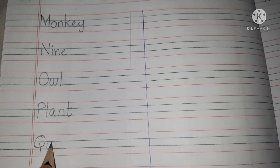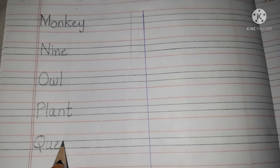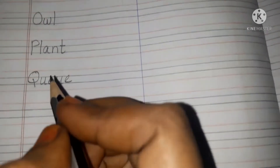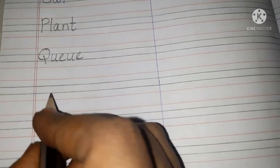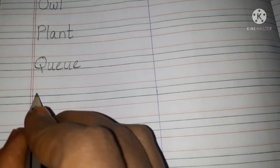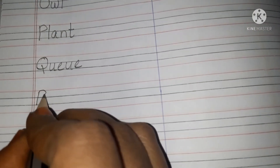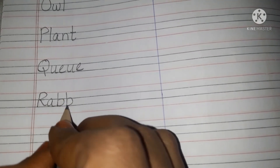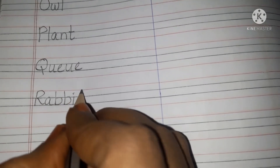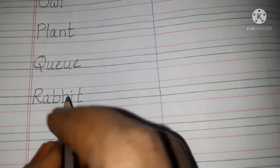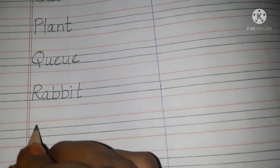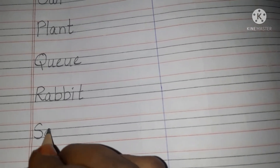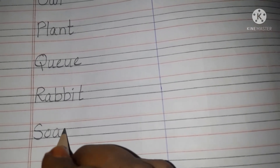O for owl — O-W-L, owl. P for plant — P-L-A-N-T, plant. Q for queue — Q-U-E-U-E, queue. R for rabbit — R-A-B-B-I-T, rabbit. S for soap — S-O-A-P, soap.